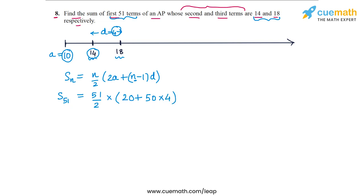This is what we get as the expression for S_51. Let's calculate this now: 51 by 2 into 20 plus 50 into 4 is 200, so we get 51 by 2 into 220, which is equal to 51 into 110, and 51 into 110 is 5610.